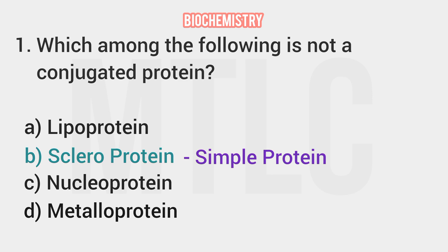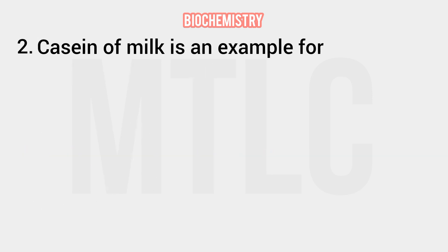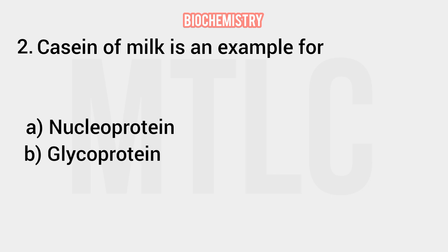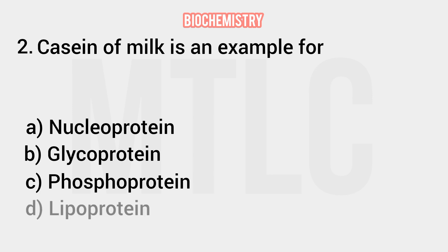Second question: casein of milk is an example of which type of protein? The options are nucleoprotein, glycoprotein, phosphoprotein, and lipoprotein. The right answer is phosphoprotein.